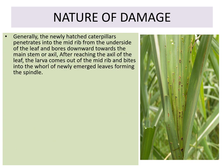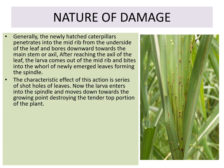The newly hatched caterpillars penetrate into the midrib from the underside of the leaf and bore downwards towards the main stem or axil. After reaching the axil of the leaf, the larva comes out of the midrib and bites into the whorl of the newly emerged leaf forming the spindle, producing a characteristic series of shot holes on the leaves.